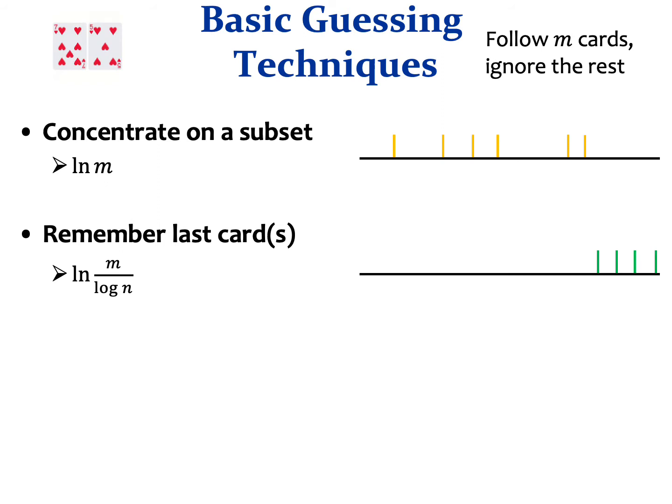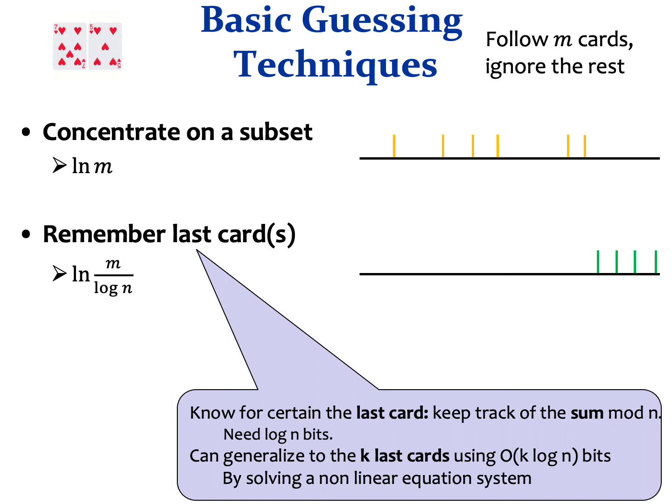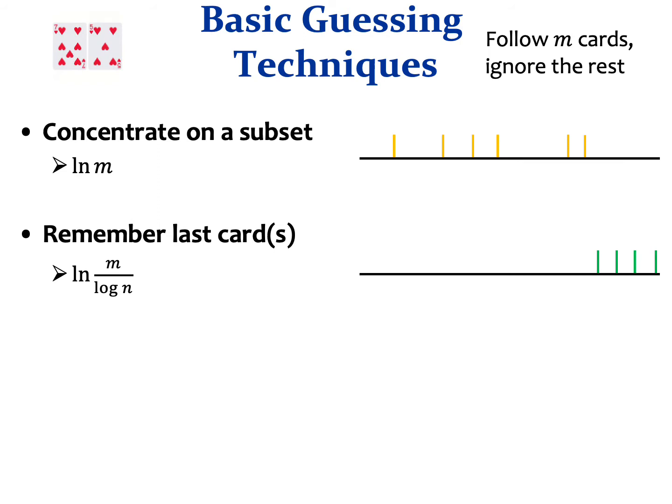Another technique is called remembering the last cards. With only log n bits, the guesser can guess the last card with probability 1. The guesser initializes her memory with the sum of all cards modulo n, and subtracts the value of each drawn card from the sum. When a single card is left, the guesser knows exactly which card it is. This technique generalizes to k cards using k log n bits, giving the guesser a fair chance to guess the last m over log n cards, resulting in ln(m / log n) correct guesses in expectation.